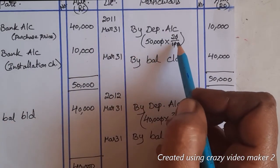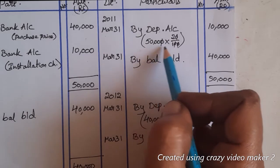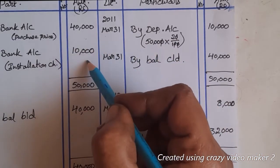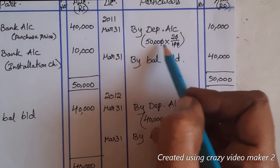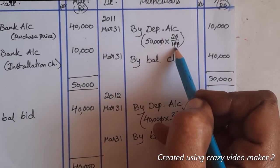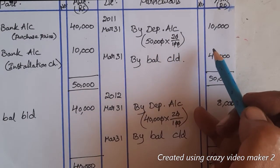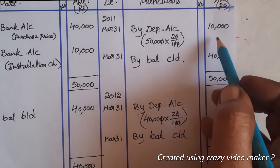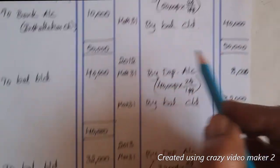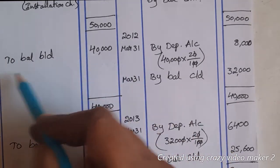On 31st March 2011, by depreciation account: total assets are ₹40,000 plus ₹10,000 = ₹50,000. We apply 20% depreciation on ₹50,000, which gives ₹10,000 depreciation for the first year. After totaling and balancing, the diminishing balance carried down to the next year is ₹40,000.